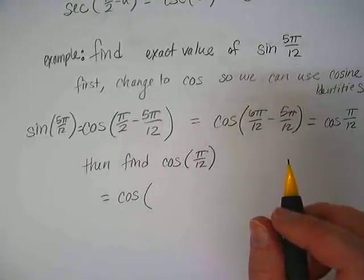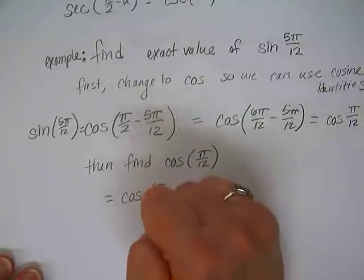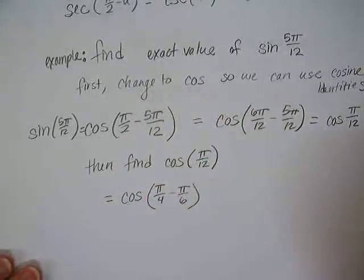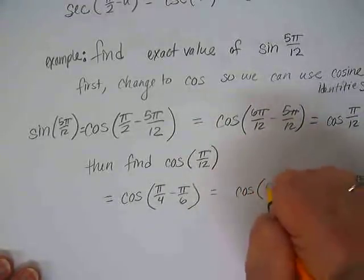So we suggested we could either do pi thirds minus pi fourths or pi fourths minus pi hat. Wait. Pi 6. Pi fourths minus pi 6. Is that okay?